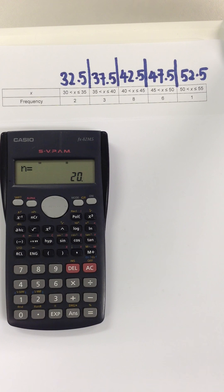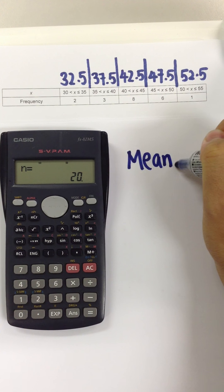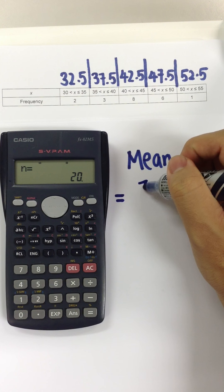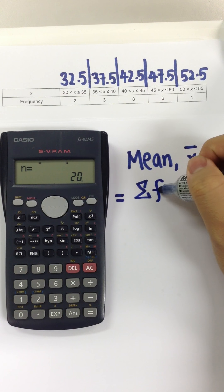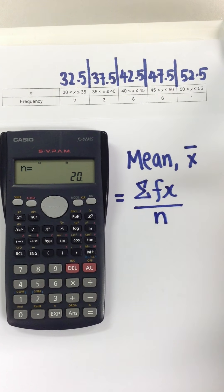Now that we have successfully keyed in all the data, we proceed to step 4: Retrieve the data. To find mean, and this is the symbol for mean, we need the value of summation of fx divided by the value of n.